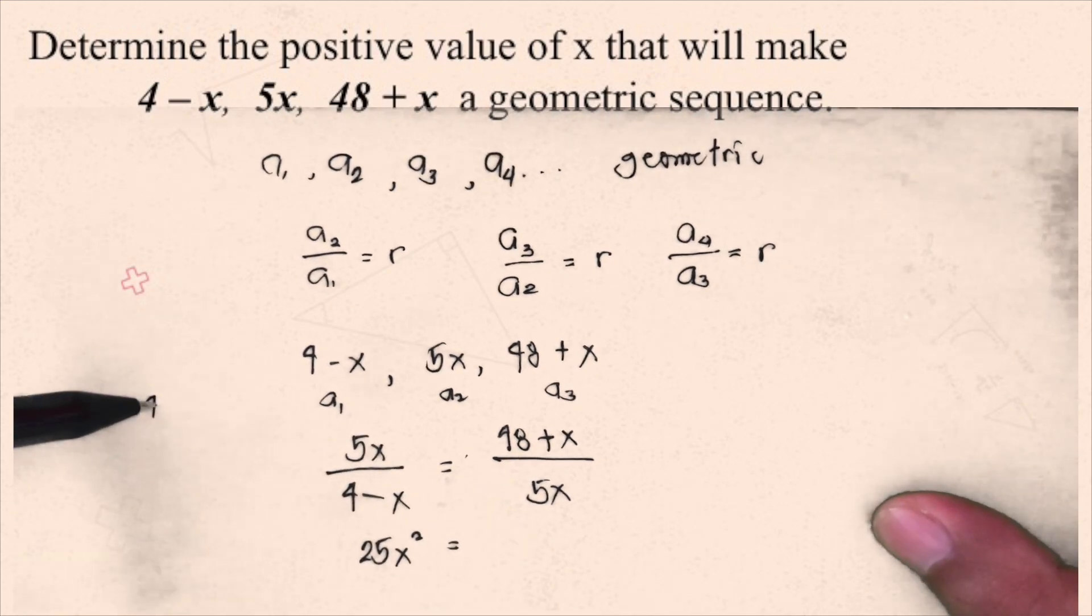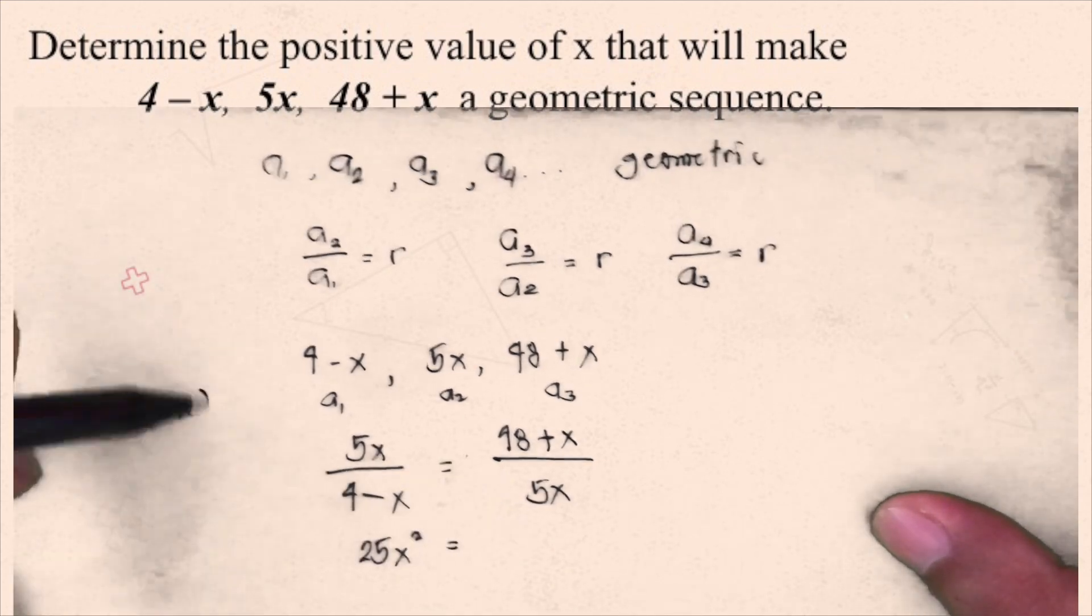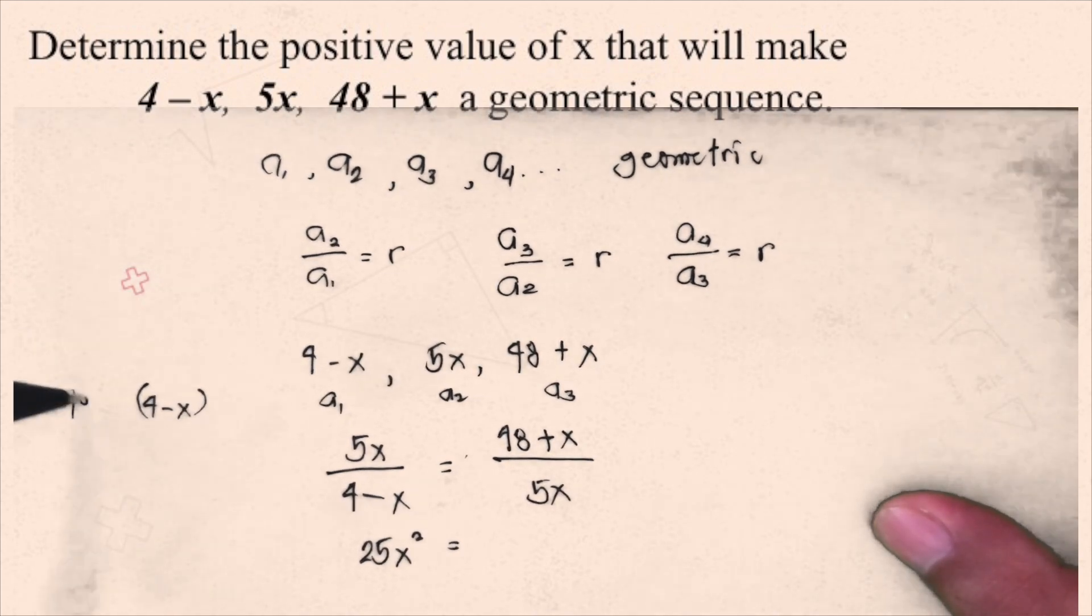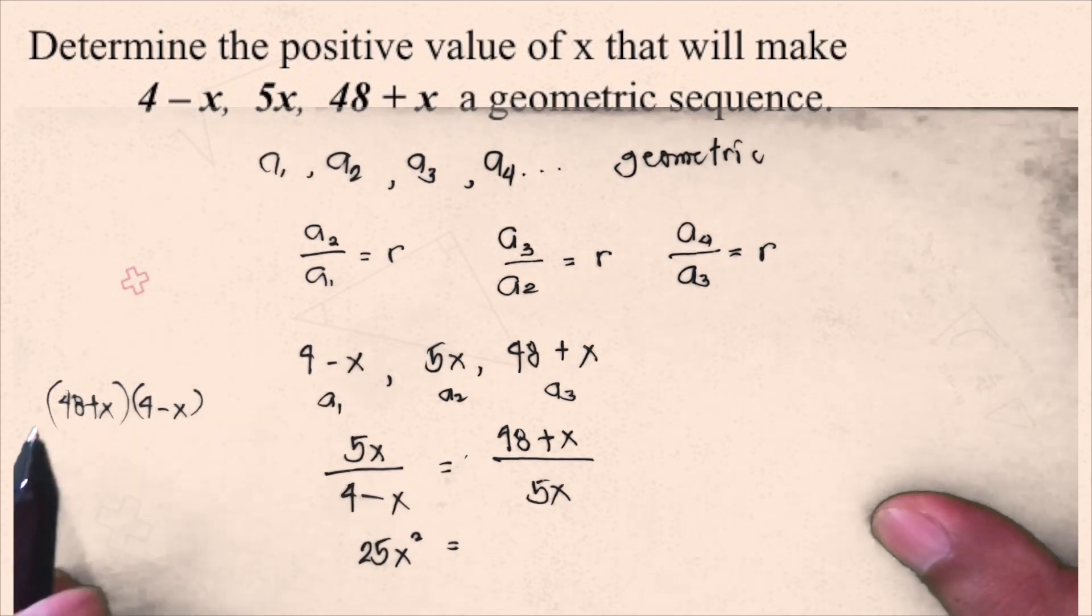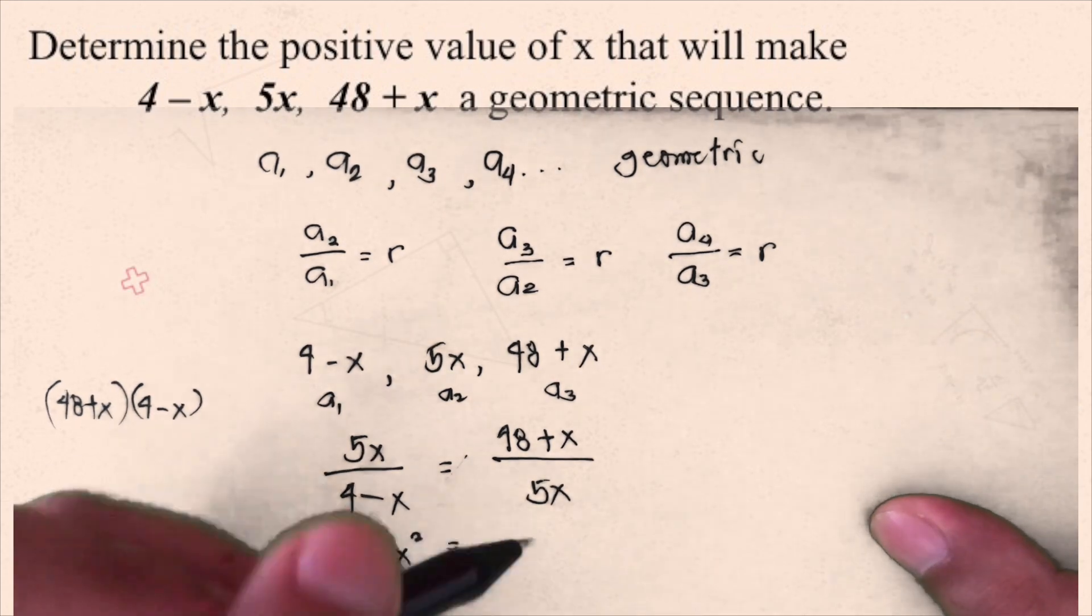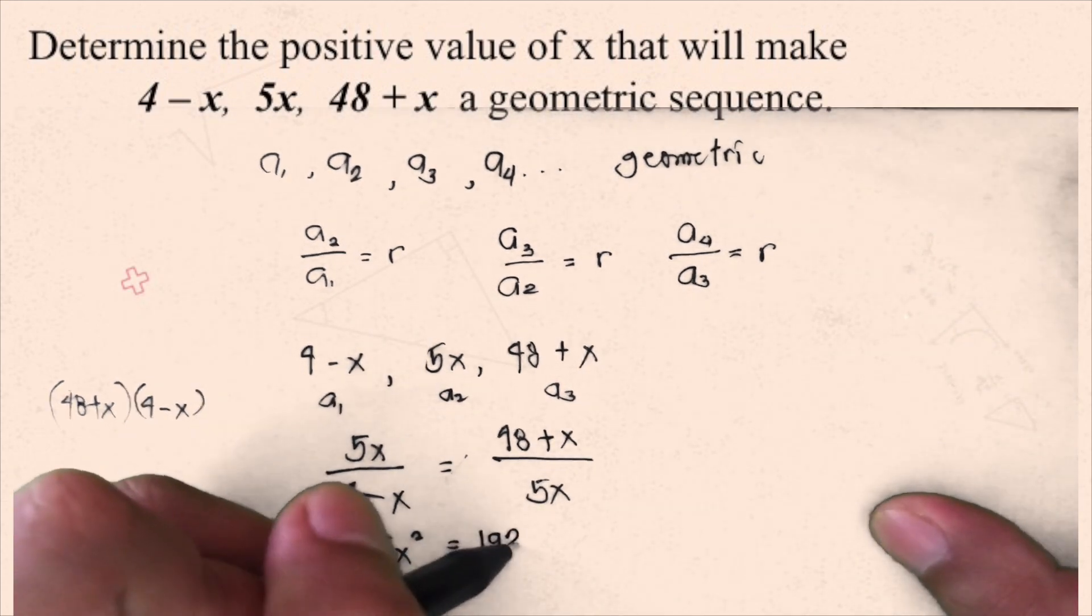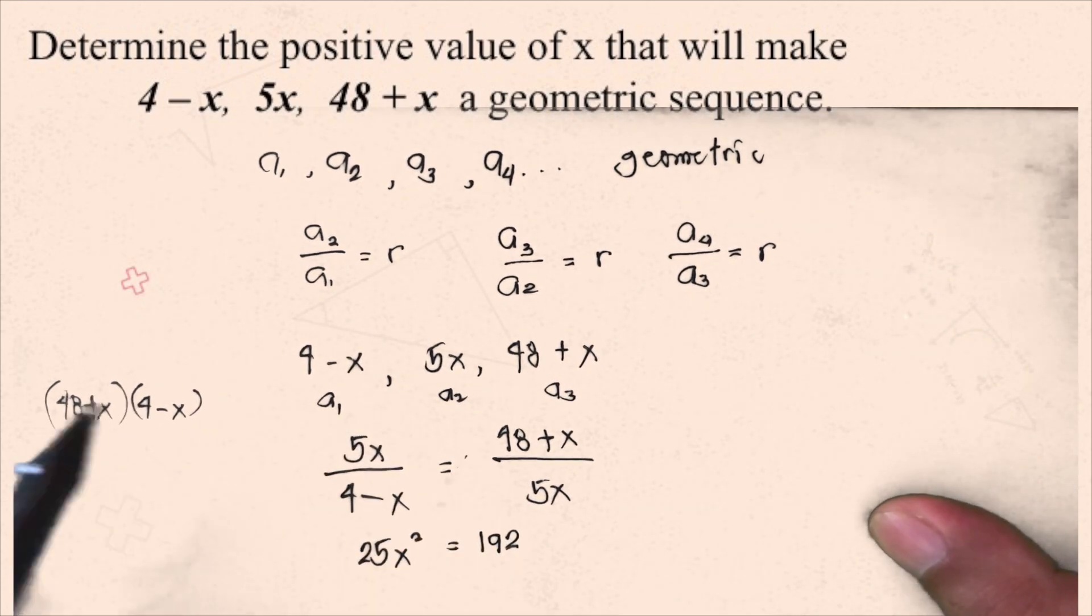And that is, let's say, 4 minus x times 48 plus x. By FOIL method, we know 48 times 4 is 192.